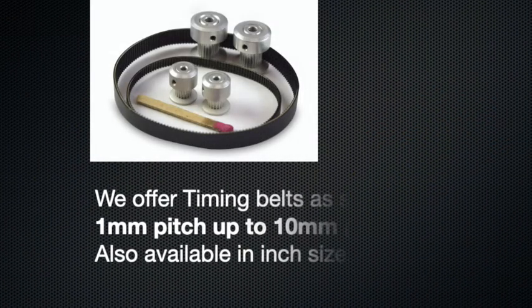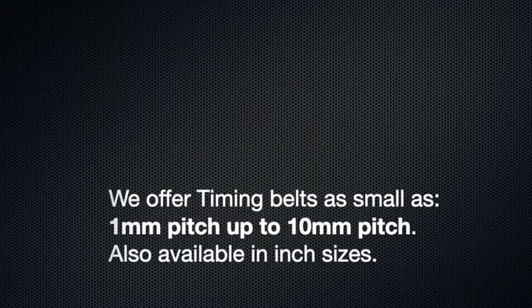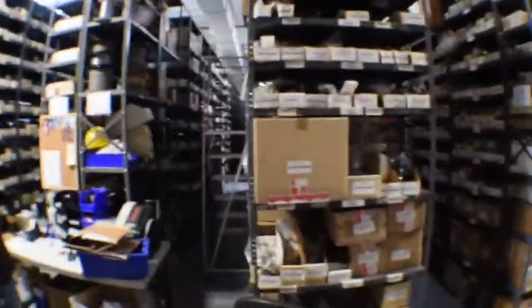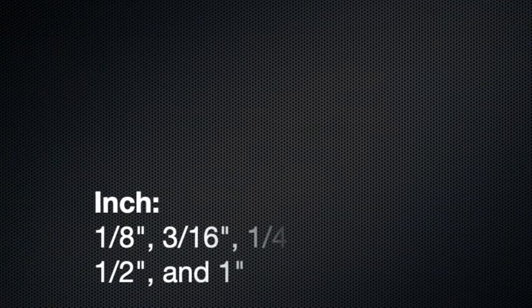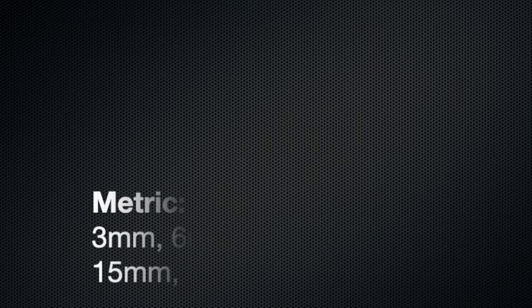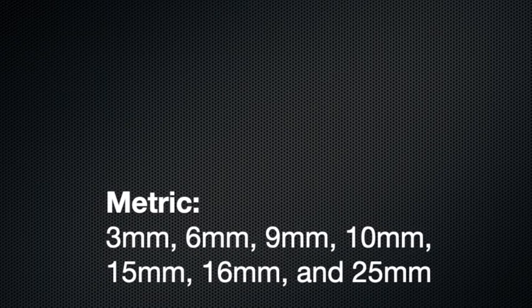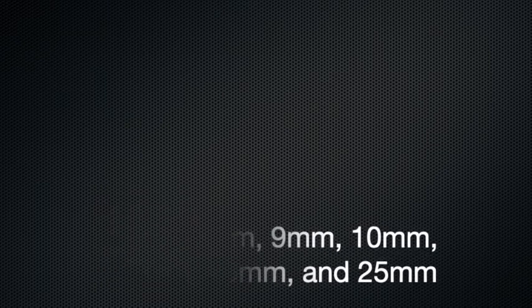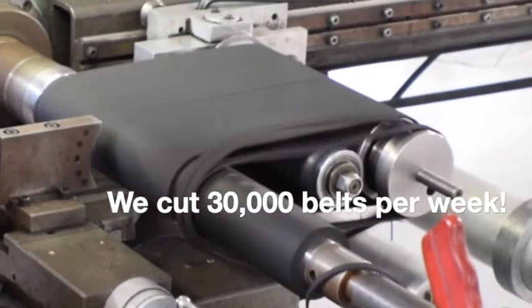We offer timing belts as small as 1 millimeter pitch and as large as 10 millimeters pitch, also available in inch sizes. We keep an inventory of the most common standard inch and metric belt widths, including inch sizes: 1/8, 3/16, 1/4, 3/8, 1/2, 3/4, and 1 inch, and metric sizes including 3mm, 6mm, 9mm, 10mm, 15mm, 16mm, and 25mm. We are capable of cutting virtually any belt width — in fact, we cut 30,000 belts per week.